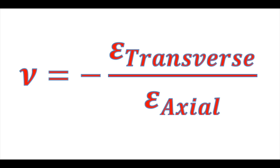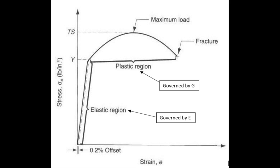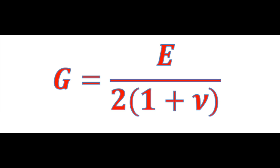The shear modulus, denoted by G, of a material governs its plastic deformation, while the elastic modulus, denoted by E, governs its elastic deformation. As shown, the shear modulus is inversely proportional to the Poisson's ratio. As a result, Poisson's ratio governs the material's ability to recover elastically following an external stimulus.